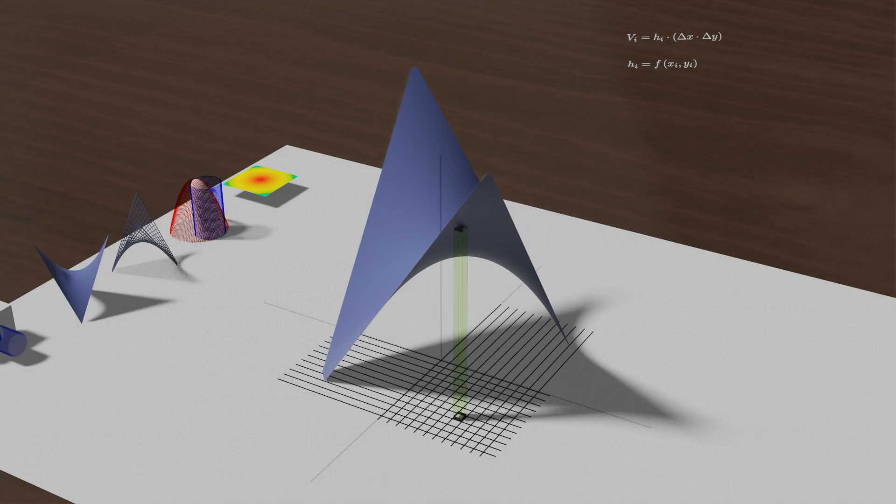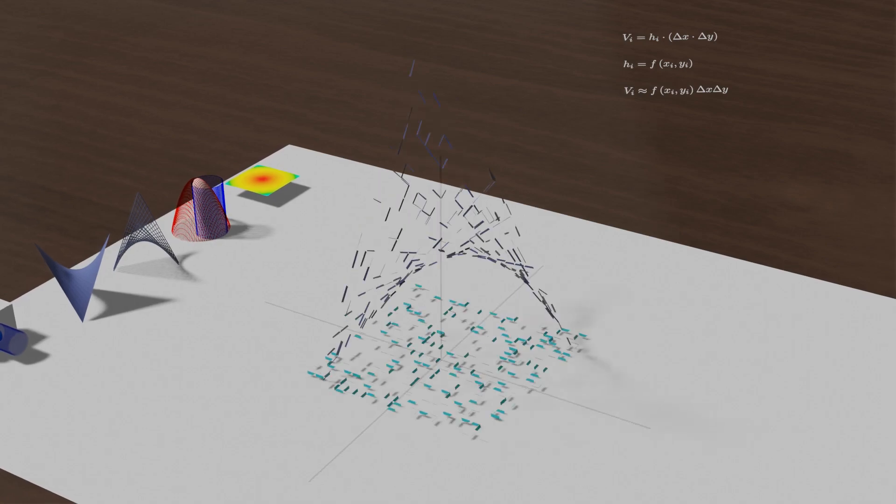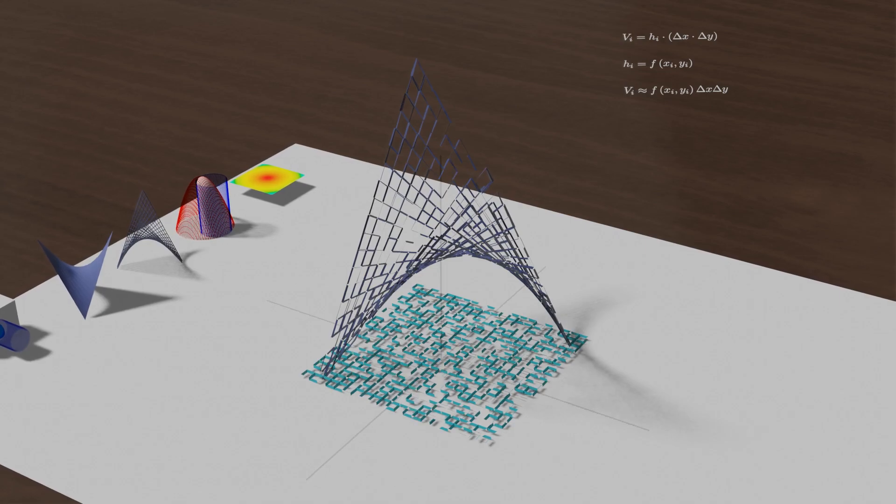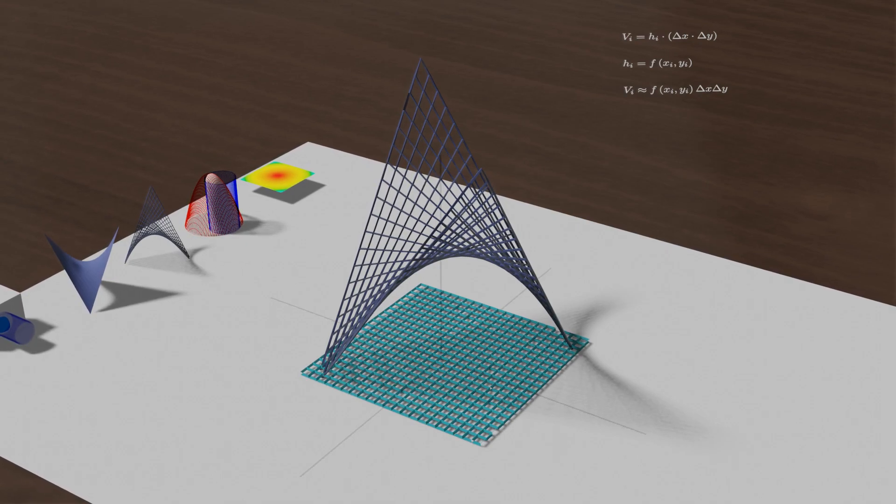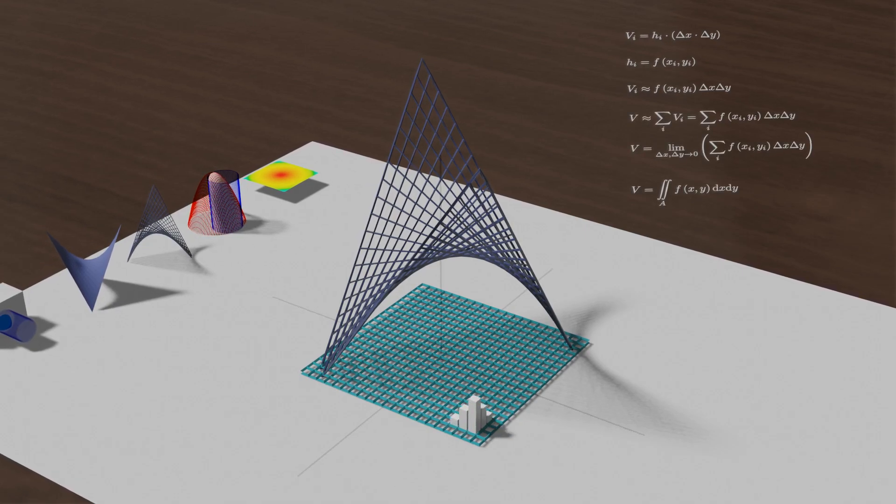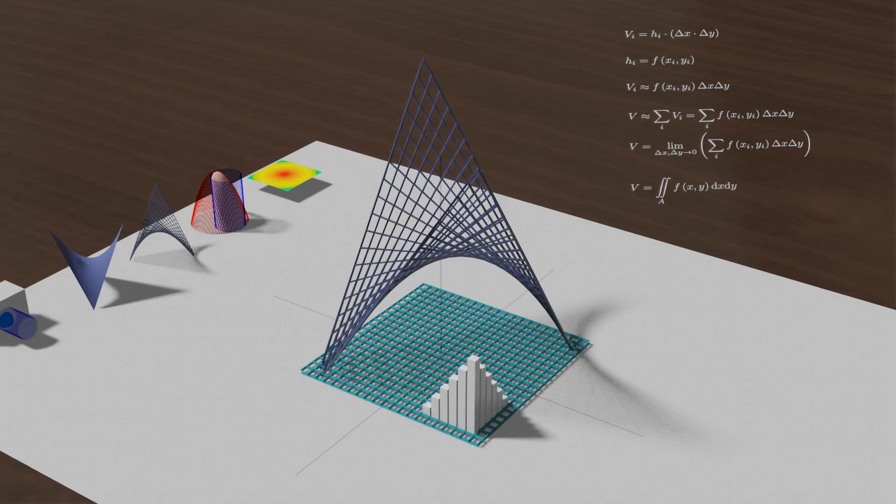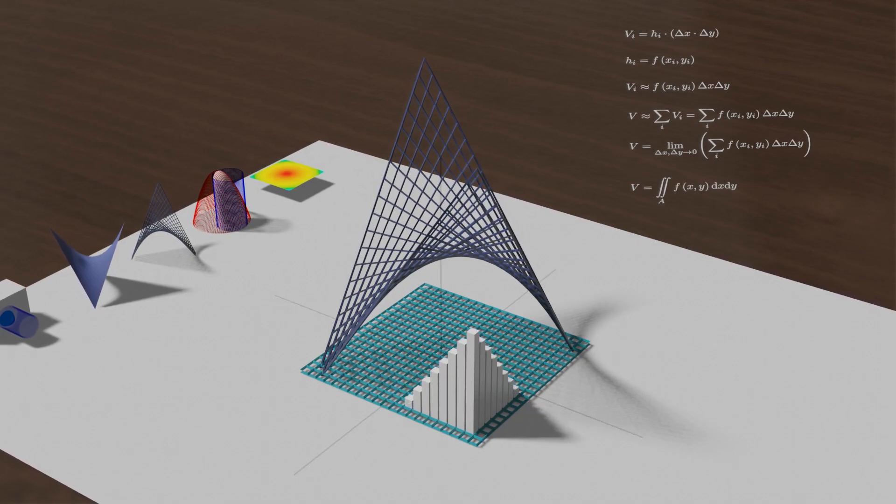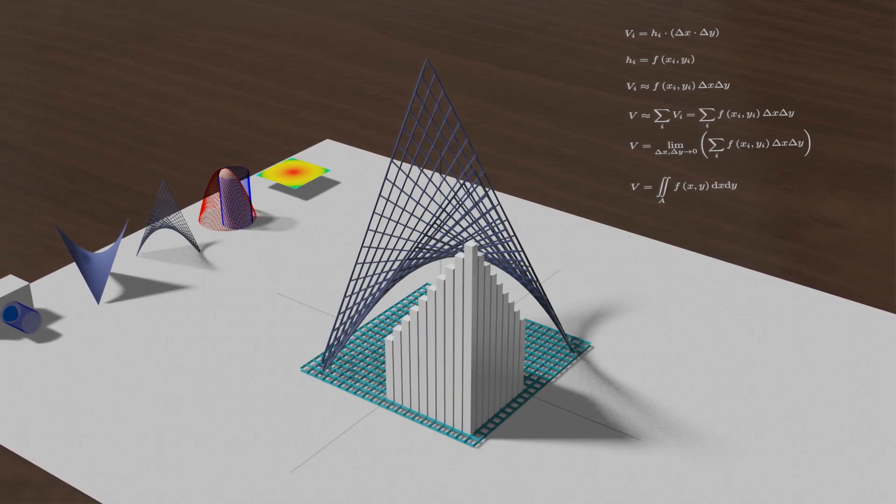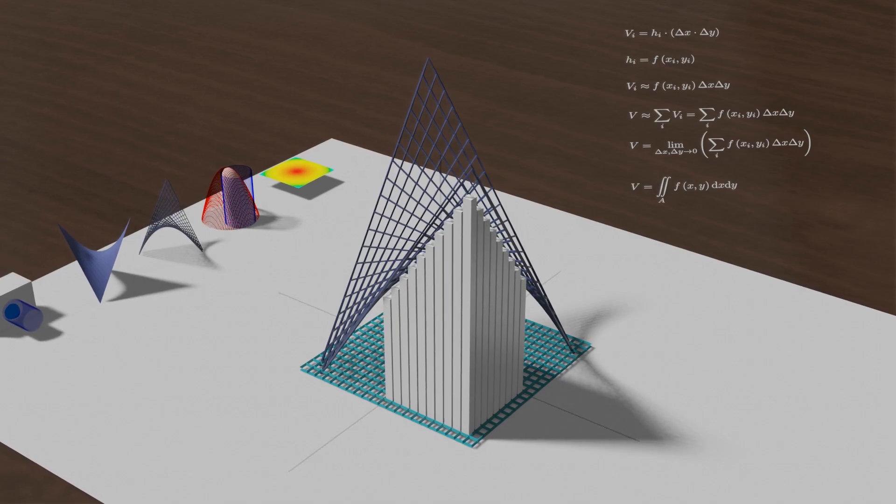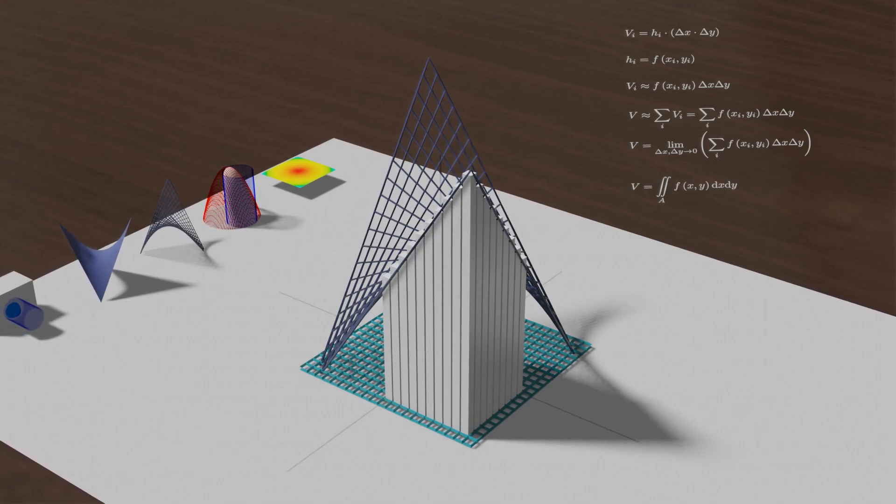And the volume of this part will be approximately given by this formula. Now, calculate the volume for each and every part and make a summation. The volume beneath the function will be approximately given by this formula. Of course, the smaller the parts, the better the precision. Finally, the correct volume can be obtained if we let delta x and delta y go to zero. In our case, the volume will be equal to this.